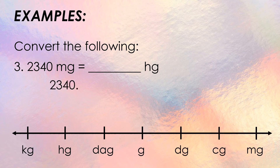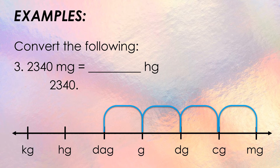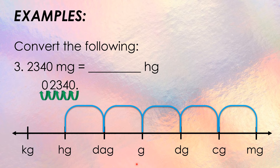Third example: 2,340 milligrams is how many hectograms? Write the given: 2340, and place a decimal point at the right end. From milligrams (mg) to hectograms (hg), we move to the left: one, two, three, four, five — five places. Move the decimal point five places to the left, filling the remaining space with a zero. Therefore, 2,340 milligrams is equal to 0.02340 hectograms.